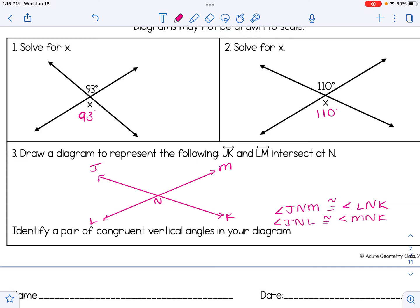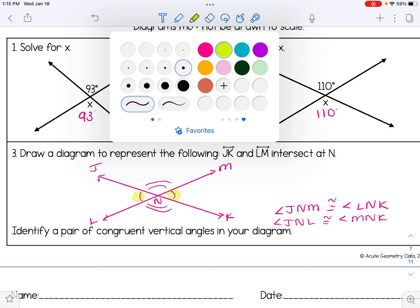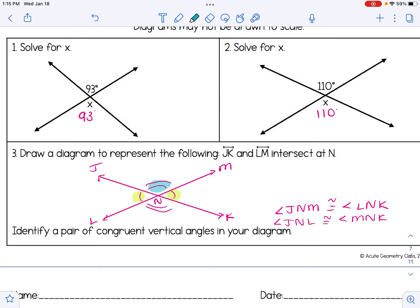If you have trouble identifying them from the picture, you could draw the little curves that we talked about before, indicating that the angles are congruent. Or if you prefer color coding, we can color code and say these two angles are across from each other, therefore they're congruent. And these two are across from each other, therefore they are congruent.